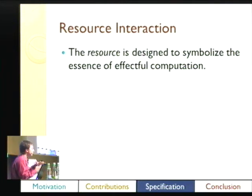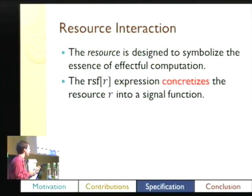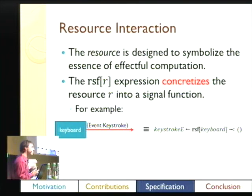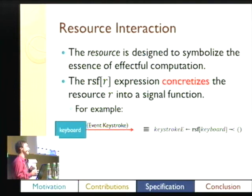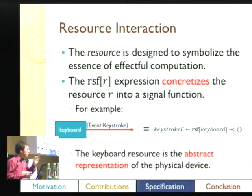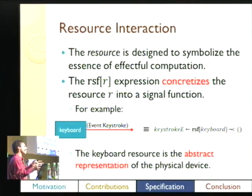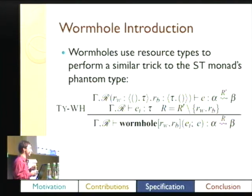For resource interaction, think of the resource as the essence of the effectful computation. `RSF` is an expression that concretizes a resource into a signal function. The keyboard example from earlier would be written in arrow code by taking the keyboard resource and concretizing it into a signal function, giving you keystroke events coming out one end and a unit stream going in the other. The keyboard resource is the abstract representation; we can't use it in an expression until we concretize it with RSF.